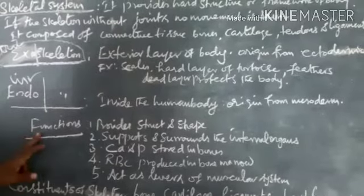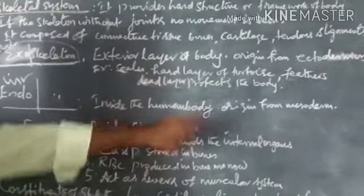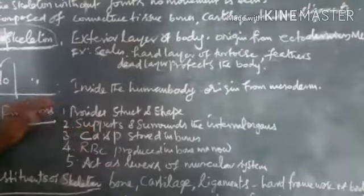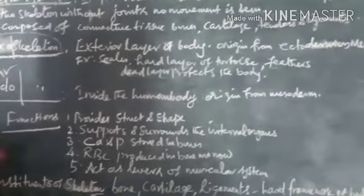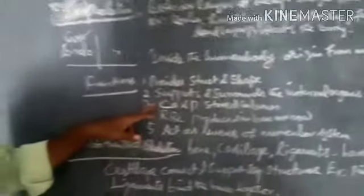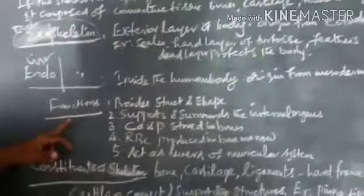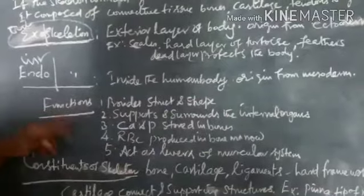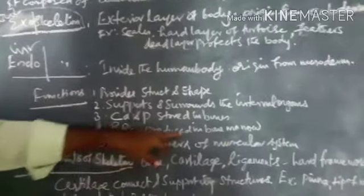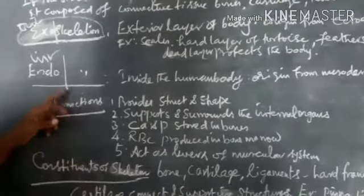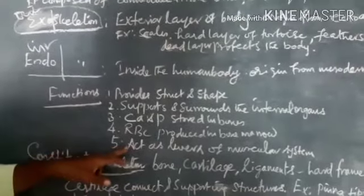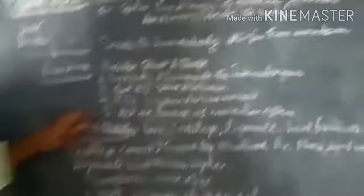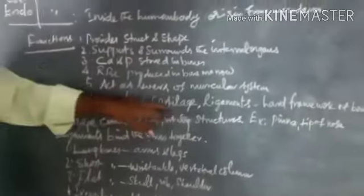What are the functions of the skeletal system? The skeletal system provides the structure and shape to the body. It also supports and surrounds the internal organs. Especially the internal organs are protected. Then the calcium and phosphorus are very essential minerals regarding the human being which is also stored in the bones. Then the RBC, the red blood corpuscles, are produced from the bone marrow. And the skeletal system acts as the levers of the muscular system.